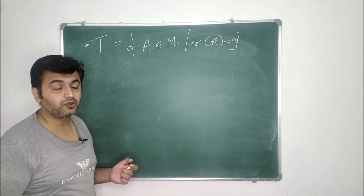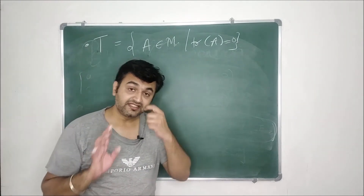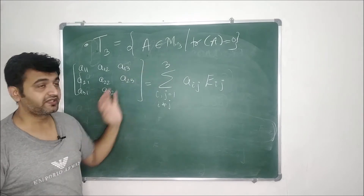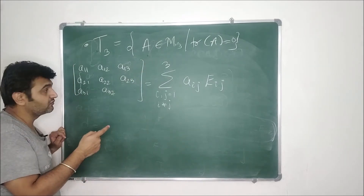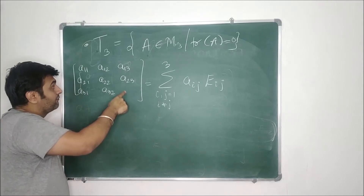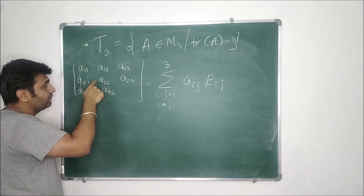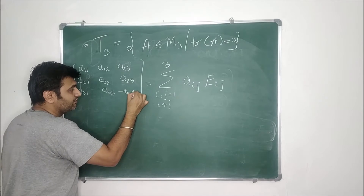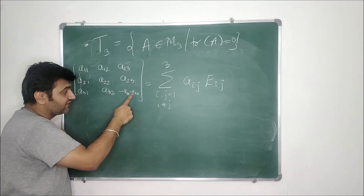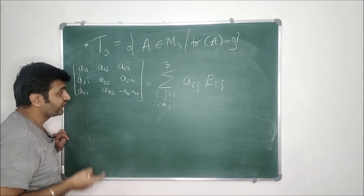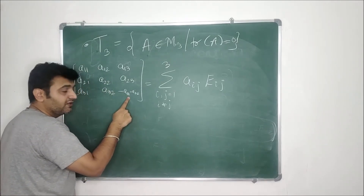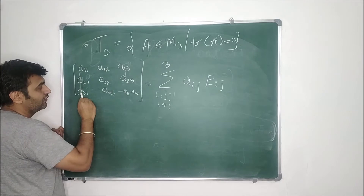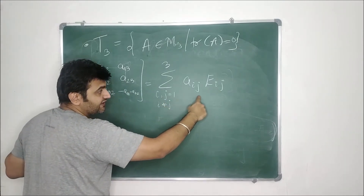Therefore B₂ is a basis for T₂, and since B₂ has three elements, the dimension of T₂ is 3. The same technique works for 3×3 matrices. T₃ is the collection of all 3×3 matrices whose trace is zero. For a 3×3 matrix, once you have entries a₁₁ and a₂₂, the third diagonal entry has no choice — it must be −a₁₁ − a₂₂. Only then will the trace be zero.